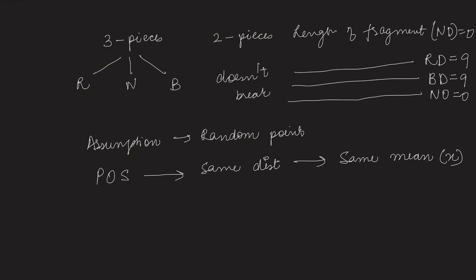Let that mean be x. So x plus x plus x should give us the total length of the rod that is 9 inches. So x comes out to be 3 inches. That is the mean of the fragment with blue dot, no dot, or red dot.